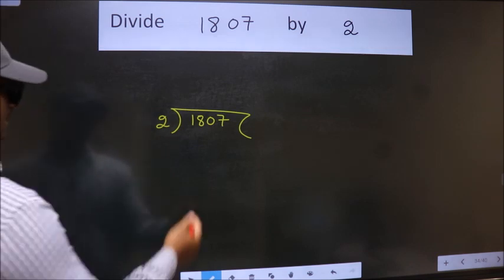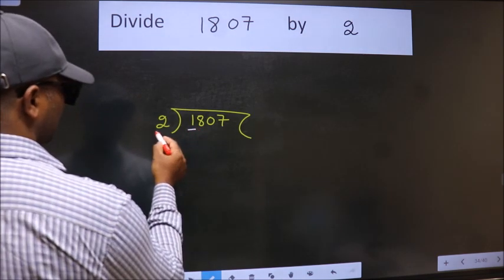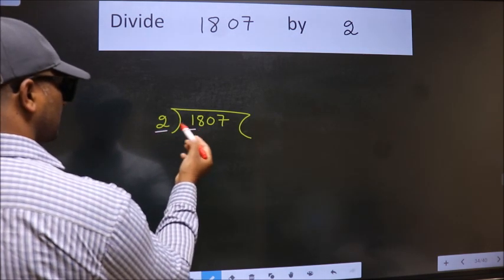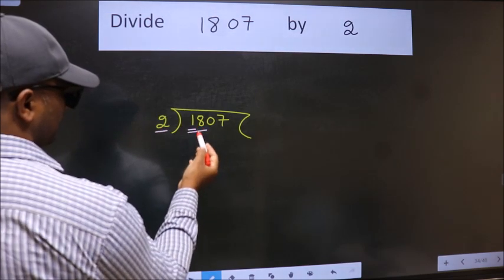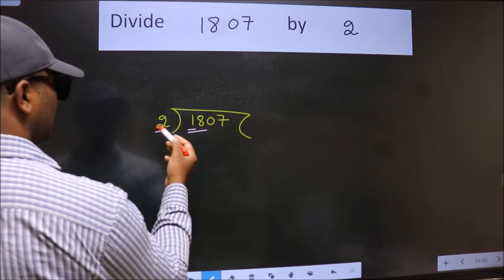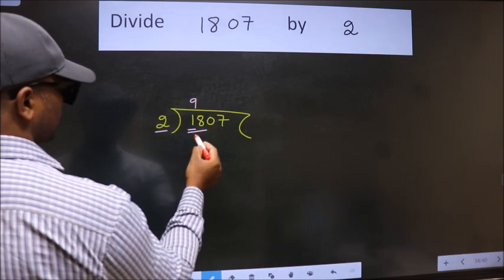Next. Here we have 1 and here 2. 1 is smaller than 2. So we should take 2 numbers, 18. When do we get 18 in 2 table? 2 nines 18.